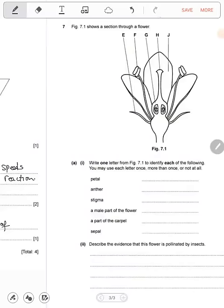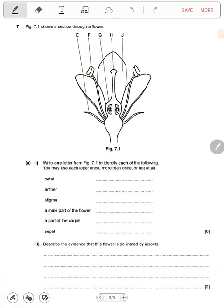Question seven. Figure 7.1 shows a section through a flower. Write one letter from figure 7.1 to identify each of the following. You may use each letter once, more than once, or not at all.